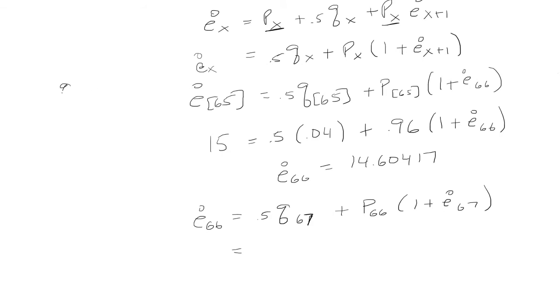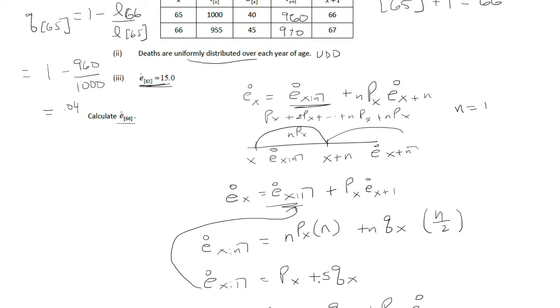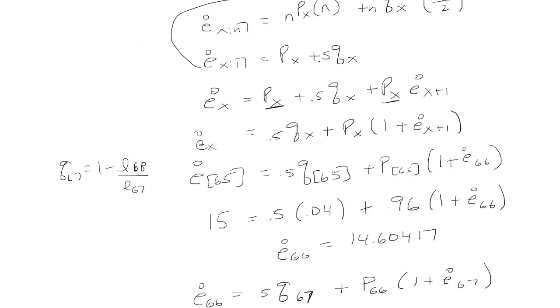Now for Q67 that's 1 minus L of 68 over L of 67. And that's why we have to be careful. Actually let's try this one again. If we go back, this should be age 66, this is a typo.